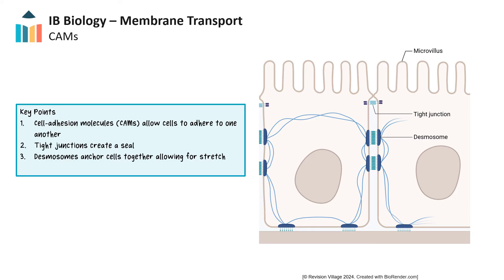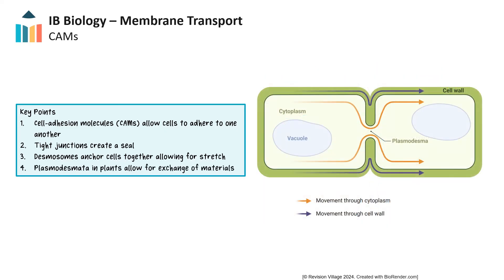Plants often produce plasmodesmata, which are CAMs with hollow tubes that connect the cytoplasm of cells. This allows for transport between the cytoplasm of cells, which often involves water and dissolved solutes like sugars. The diversity of CAMs allows for the specialization needed to form and maintain different tissue types throughout the body.